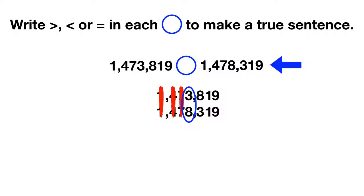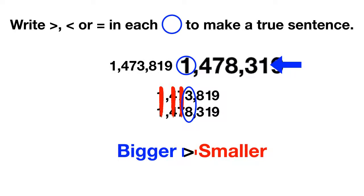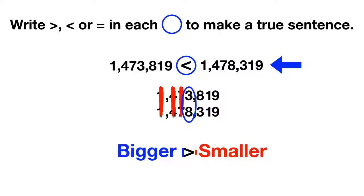Now which way should we put our greater than or less than symbol to show this? Remember, the big open side is the bigger number and the small pointy side is the smaller number. So to show that our second number is bigger, we should have the big open side facing our second number.